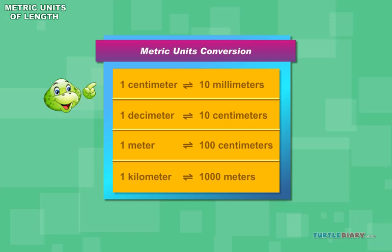You can see the conversion table for all metric units. 1 centimeter equals 10 millimeters, 1 decimeter equals 10 centimeters, 1 meter equals 100 centimeters, 1 kilometer equals 1,000 meters.